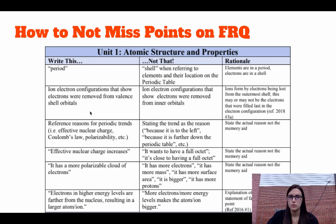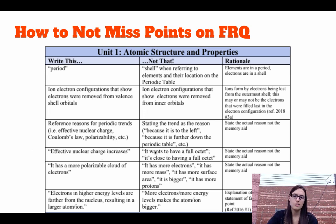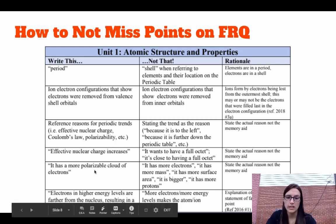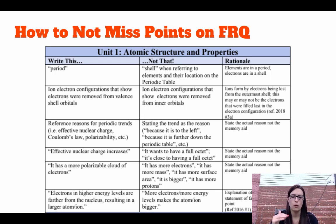Make sure you reference the reasons for periodic trends — effective nuclear charge, Coulomb's Law. You cannot just say 'because it increases this way.' Use effective nuclear charge when going across a row. Do not say an atom is 'stable' or 'wants a full octet.' You must use terms like effective nuclear charge, polarizable cloud of electrons, and explain that electrons are in higher energy levels and farther from the nucleus. Talk about where the valence electrons are in relation to the nucleus.